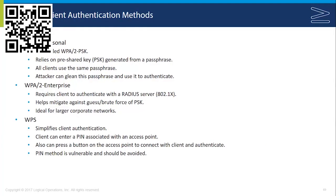WPA2 Enterprise requires the client to authenticate using 802.1X with a RADIUS server. It helps mitigate against guessing and brute-force cracking of PSKs and is ideal for larger corporate networks. In this case, clients typically have a certificate assigned to them, which is used to authenticate, and that authentication is forwarded to a RADIUS server.